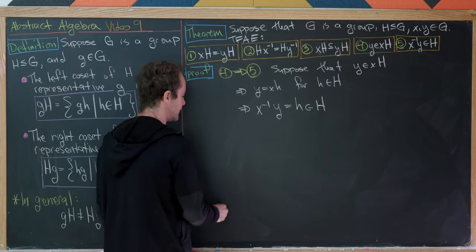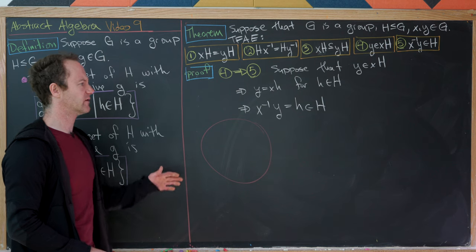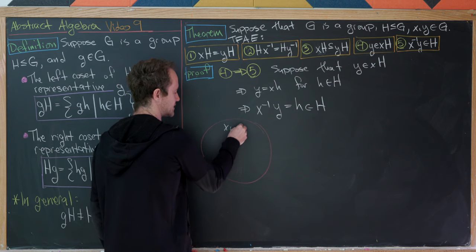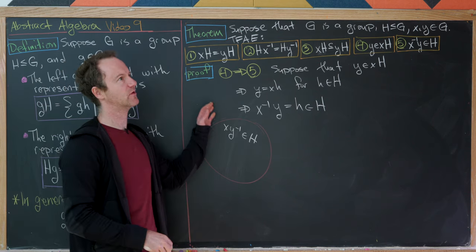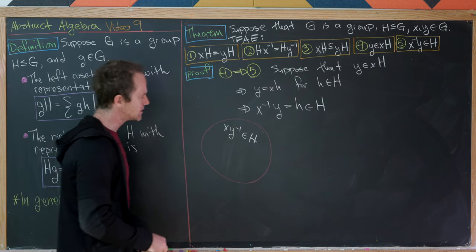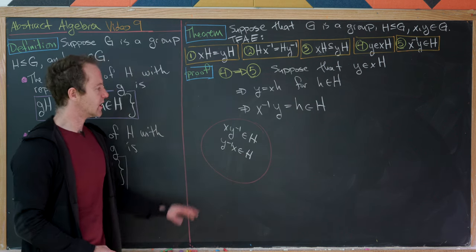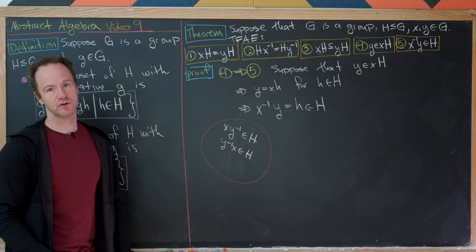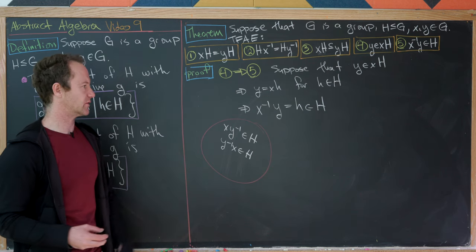It's also worth noting that equivalent statements include xy⁻¹ ∈ H, y⁻¹x ∈ H, and similar variants, obtainable through symmetric arguments. These are all equivalent to xH = yH, even though we would prove them in parallel. The proofs are so similar we won't go through them all.